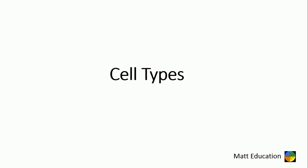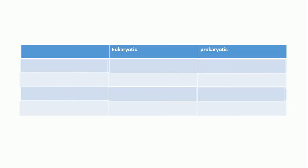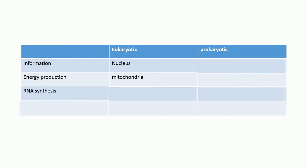A cell exists in two types: eukaryotic and prokaryotic. In eukaryotic cells, the information center is the nucleus, energy production is by mitochondria, and RNA synthesis occurs in the nucleus, while the DNA is linear.